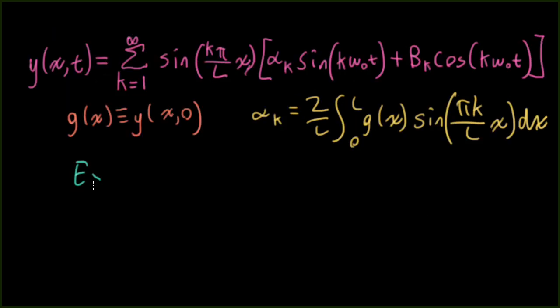All right, so I'm going to try two different examples. In the first example, the string is going to have a triangular structure at its initial condition. So it's going to go from 0 up to a height of 1 at a position l over 2. So here's position 0 and position l. This corresponds to plucking the string in the middle.